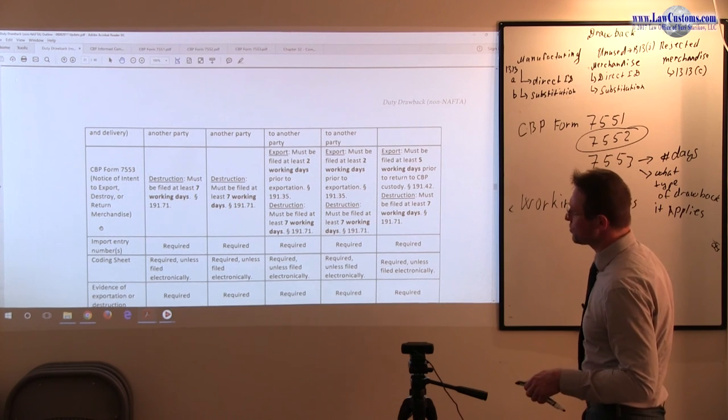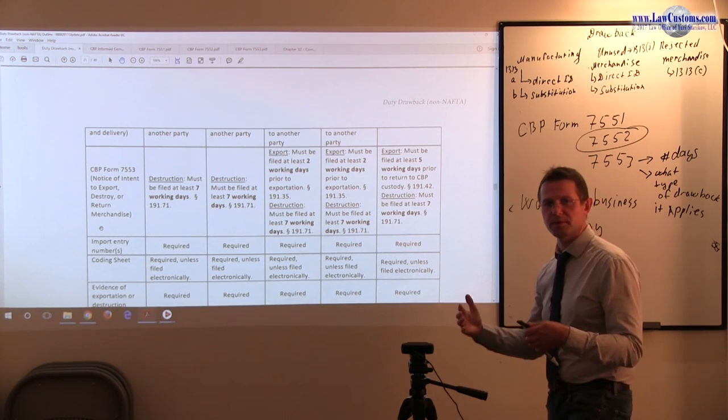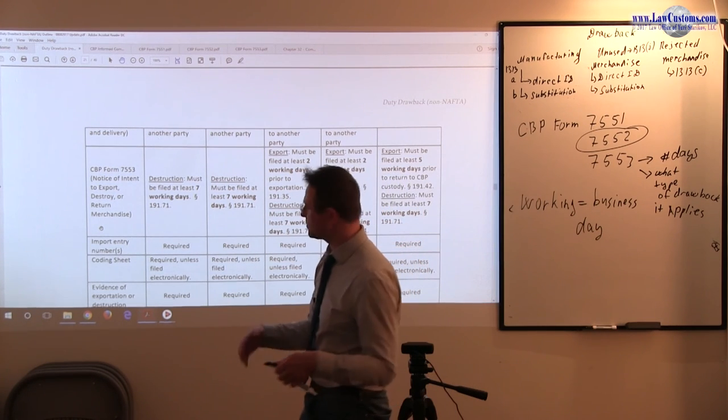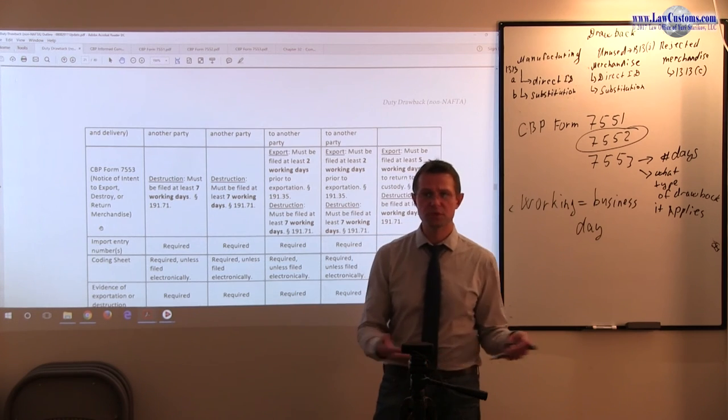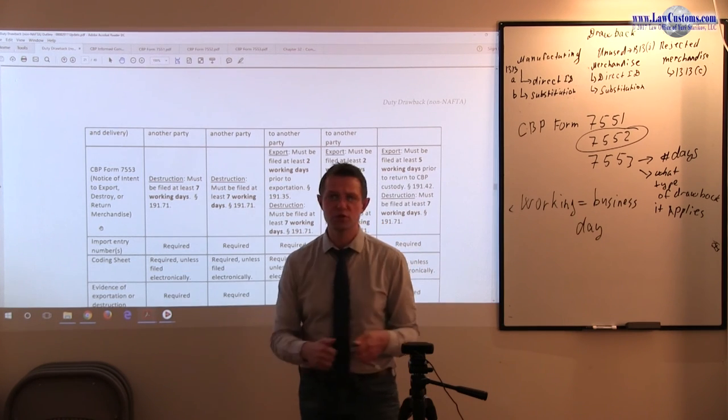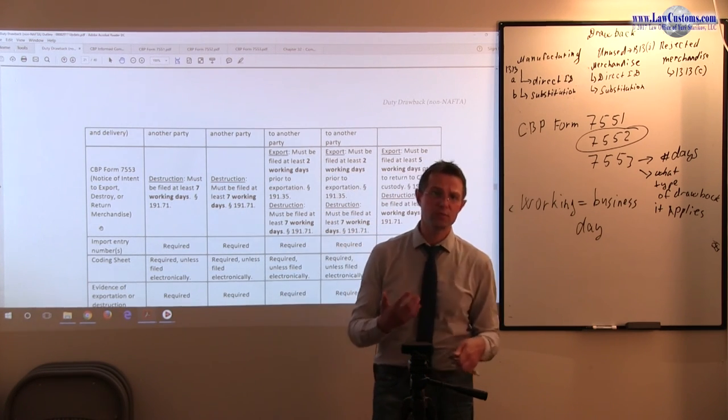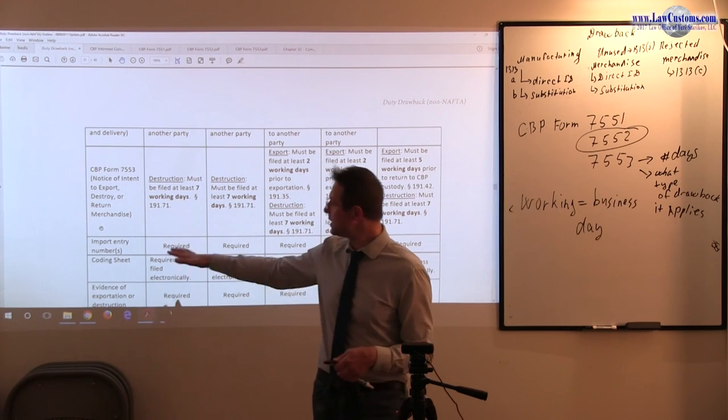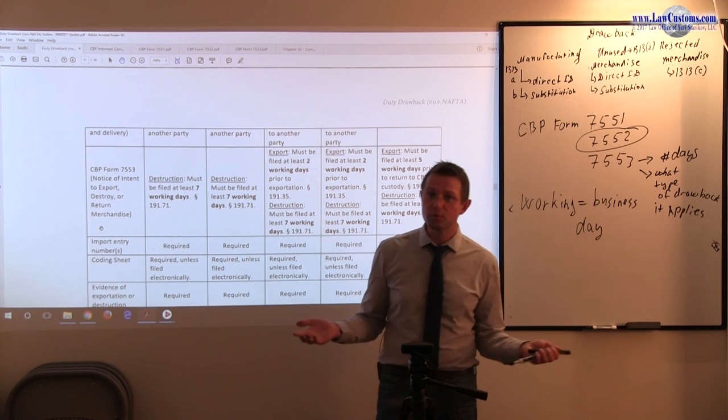So import entry numbers, of course, you have to relate this to the original entry, because there is no drawback. Even substitution has to be tied to the importation, because you are asking for amount of duties paid, 99% duties and fees paid. And without import, there would be no duties, correct?